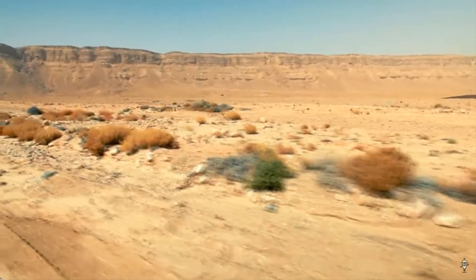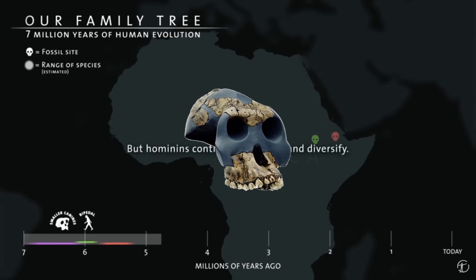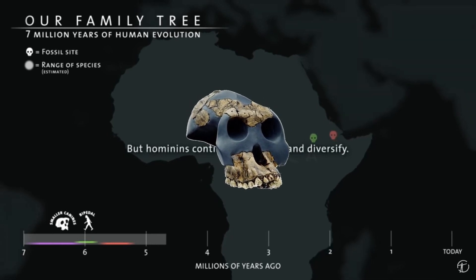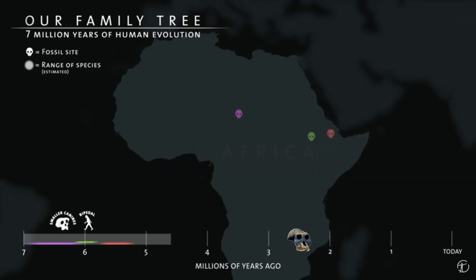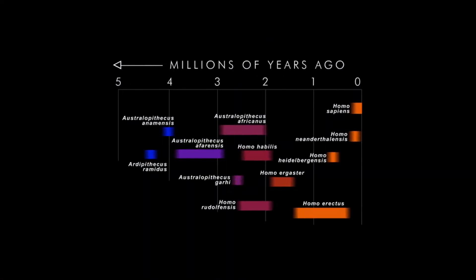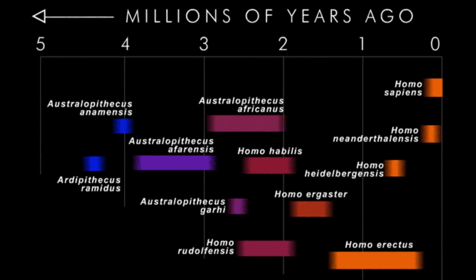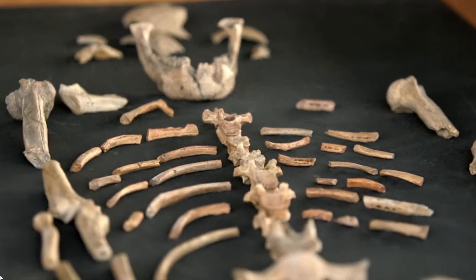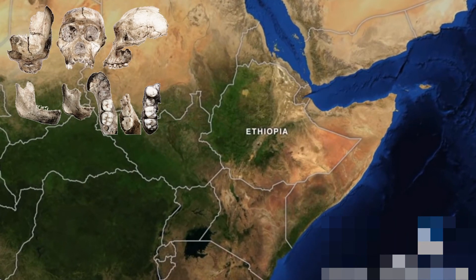The fossils are significant as they help fill the period between two and three million years ago, a time with a poor human fossil record. Australopithecus garhi was part of that age, living in Africa from 2.4 to 2.6 million years ago. However, this is a date for the fossils only, not a date range for the species — more fossils need to be found to determine the species' full time range.